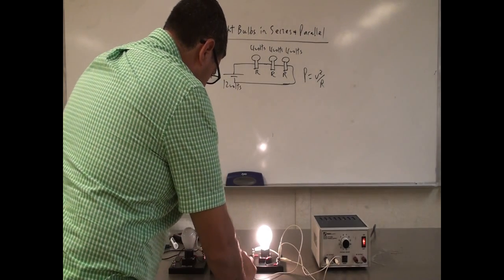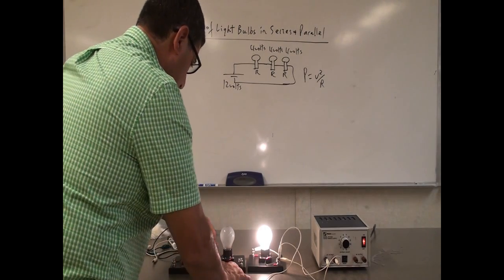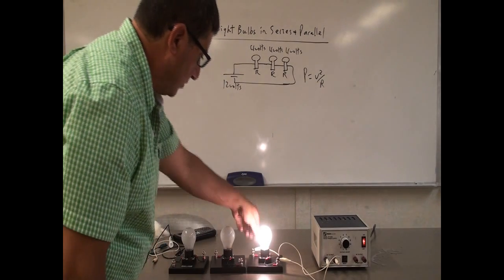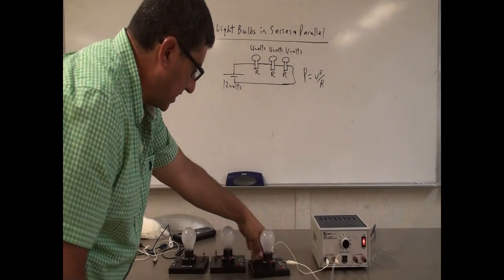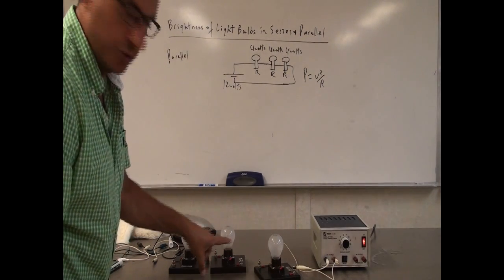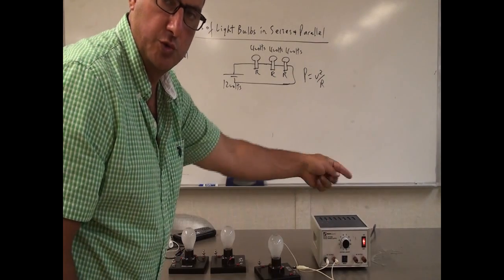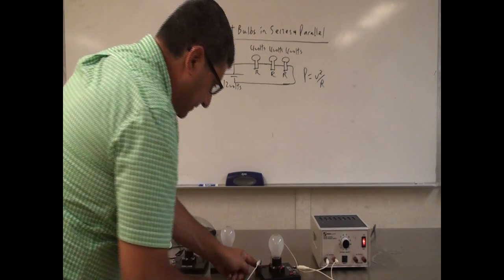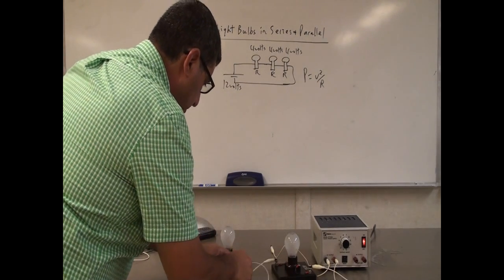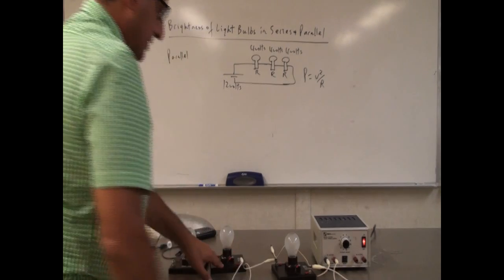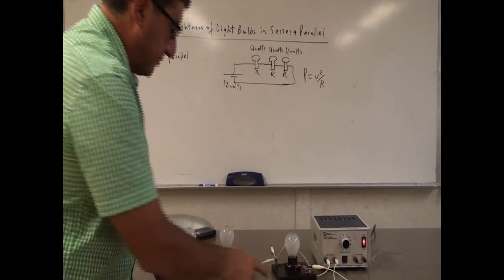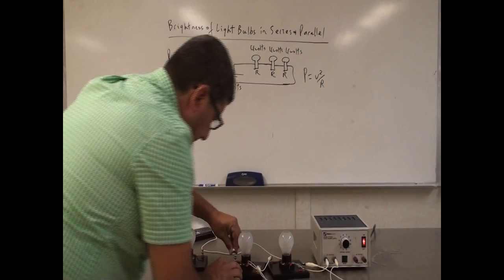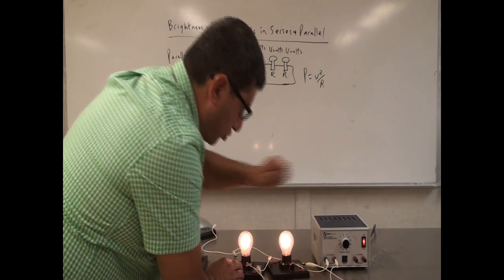In order to do series, you go from the power source to this light bulb. But what you have to do is from the other end of the light bulb, you have to go to the other light bulb — you cannot go from here back to the battery because you will close the circuit. So in order to do series, you go from this light bulb, from the other end of the light bulb, all the way to the second light bulb. That's where series differs significantly from parallel. You go from the power source to the light bulb, from the other side to the other light bulb, then complete the wiring back to the power source.